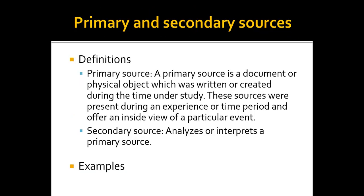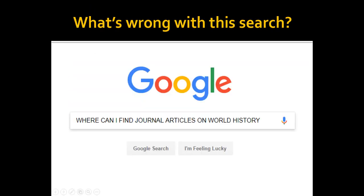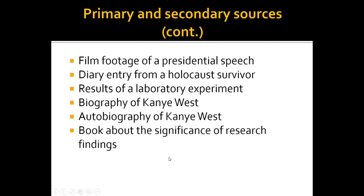Just quickly, primary versus secondary sources. A primary source — these can mean different things in different fields — is essentially straight from the horse's mouth; it has no layer of analysis over it. A secondary source, however, will analyze or interpret primary sources or even other secondary sources. For example, film footage of a presidential speech would be a primary source — it's simply the speech. If there was commentary from political pundits during the speech, that commentary would be a secondary source, analyzing the speech itself. A diary entry from a Holocaust survivor is a primary source; results of a laboratory experiment are a primary source; a biography of Kanye West would be a secondary source; an autobiography would be a primary source. Anytime there's a layer of analysis, it's going to be a secondary source.